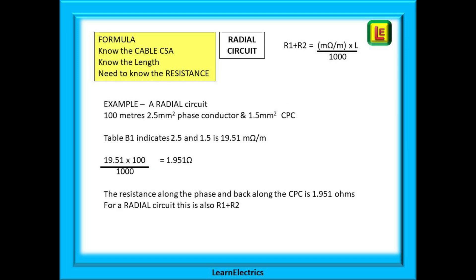Let us calculate a radial circuit now. This will give us the R1 plus R2 figure that we need for our test certificates. This time we have 100 meters of twin and earth cable. This is standard cable, so 2.5 phase and neutral will have a 1.5 millimeter earth conductor. Table B1 shows that 2.5 conductor paired with 1.5 CPC will give 19.51 milliohms of resistance for every meter of this twin and earth cable.